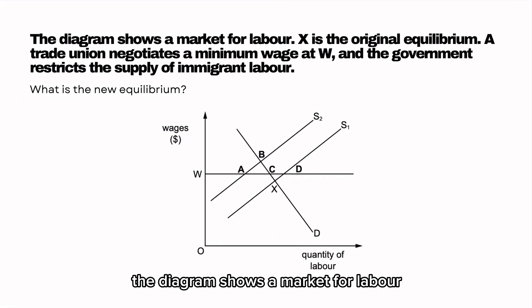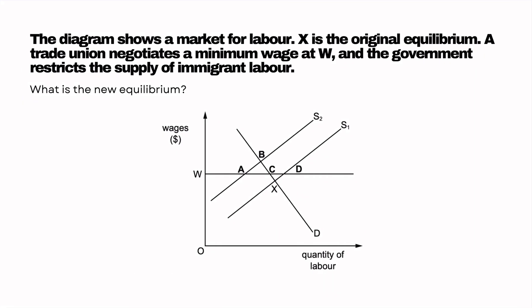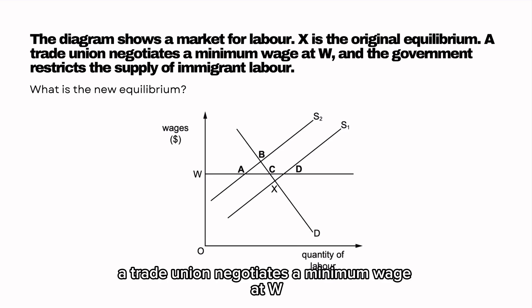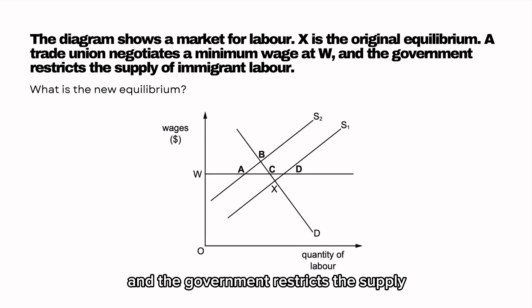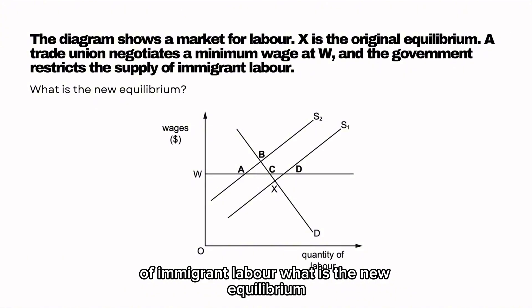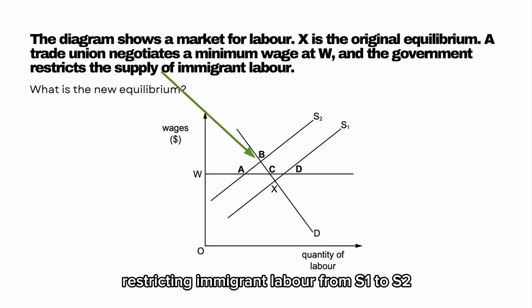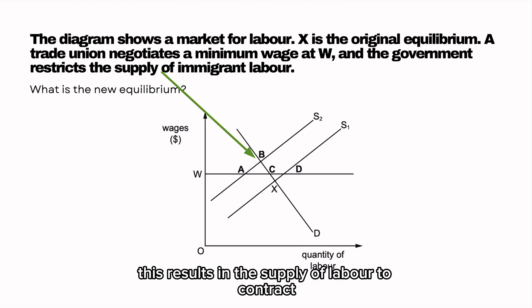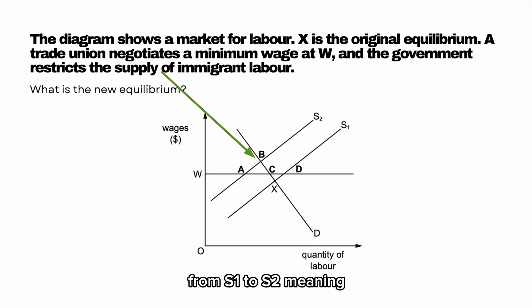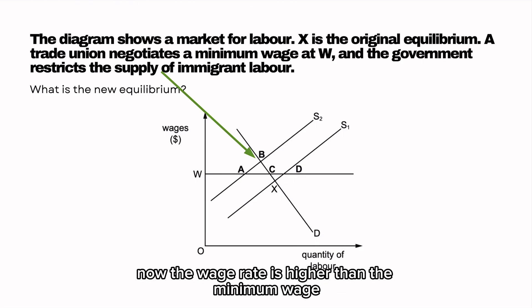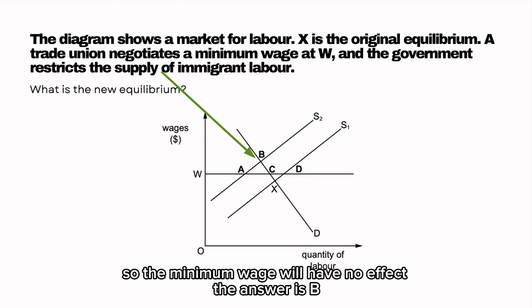The diagram shows a market for labour. X is the original equilibrium. A trade union negotiates a minimum wage at W, and the government restricts the supply of immigrant labour. What is the new equilibrium? Restricting immigrant labour causes supply to contract from S1 to S2, meaning the wage rate is now higher than the minimum wage. So the minimum wage will have no effect. The answer is B.